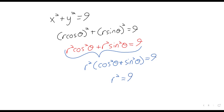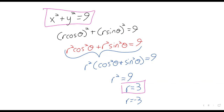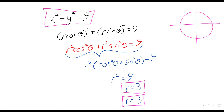And if your instincts are telling you that, they are entirely correct. The cosine squared plus the sine squared is 1. We get that r squared equals 9. And we actually end up with two solutions: r equals 3 and r equals negative 3. All three of these equations — r squared equals 9, r equals 3, and r equals negative 3 — generate the same circle.